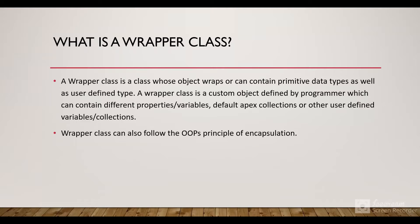So firstly let's discuss what is a wrapper class. A wrapper class is a class whose objects wrap or can contain primitive data types as well as a user-defined type. A wrapper class is a custom object defined by the programmer which can contain different properties, variables, default APEX collections, or other user-defined variables and collections.